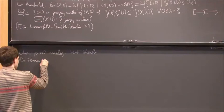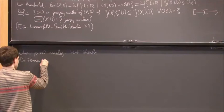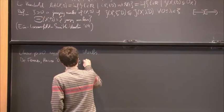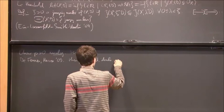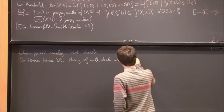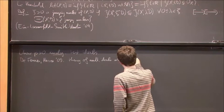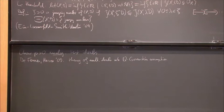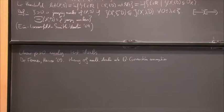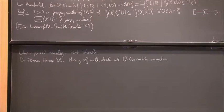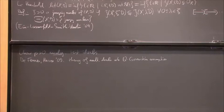In characteristic p, the analog of multiplier ideals is called test ideals. For test ideals, you don't need a resolution and you don't need a Q-Cartier assumption — they are defined in terms of the Frobenius map, so it's a purely algebraic definition. There are theorems due to Smith, Hara, Hara-Yoshida, and Takagi saying that if you take something in characteristic zero and reduce to characteristic p, then for p large enough, the multiplier ideal will exactly reduce to the test ideal. So in characteristic p, you don't need any Q-Gorenstein assumptions, making it a natural question to find a theory of multiplier ideals in characteristic zero that does not rely on the Q-Gorenstein assumption.